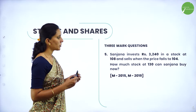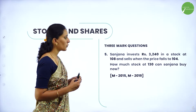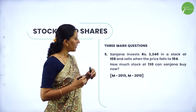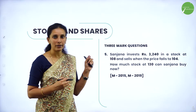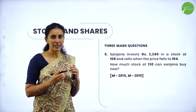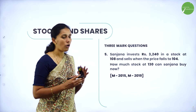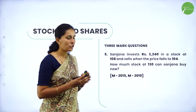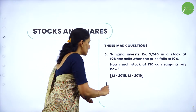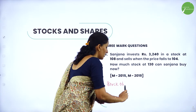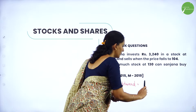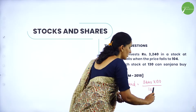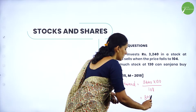Three-mark question: Sanjana invests Rs.3240 in a stock at 108 and sells when the price falls to 104. How much stock at 130 can Sanjana buy now? First, stock obtained = 3240 × 100 / 108, which gives 3000. So Sanjana has Rs.3000 worth of stock.